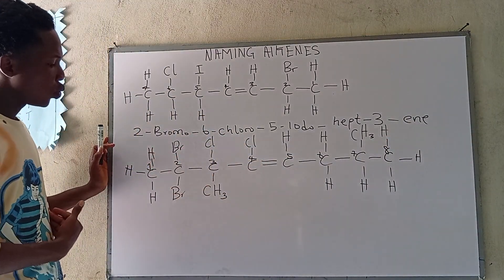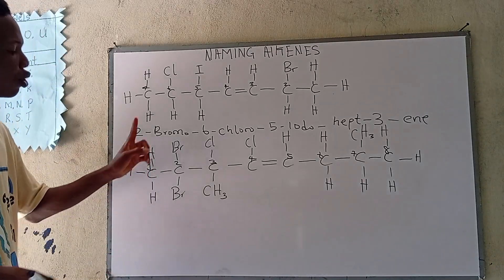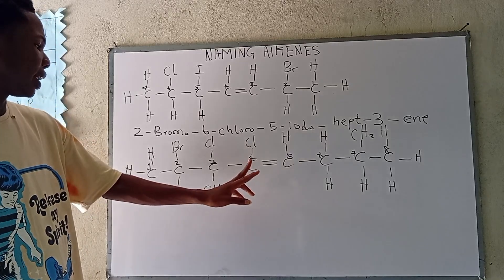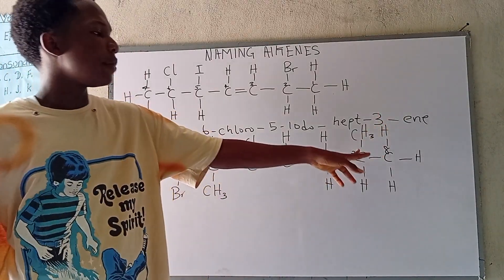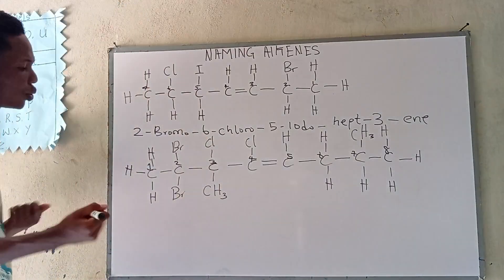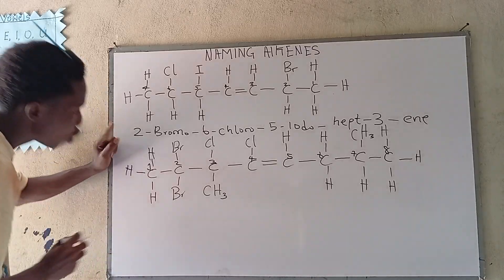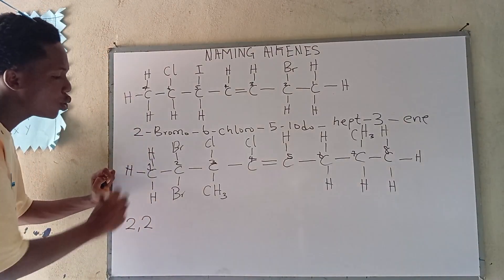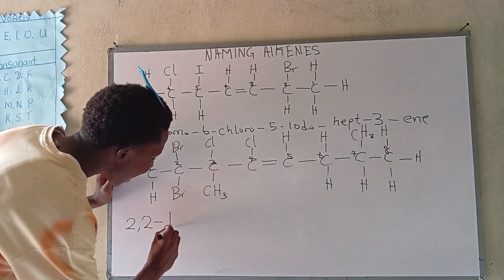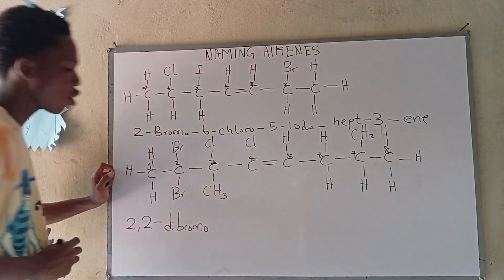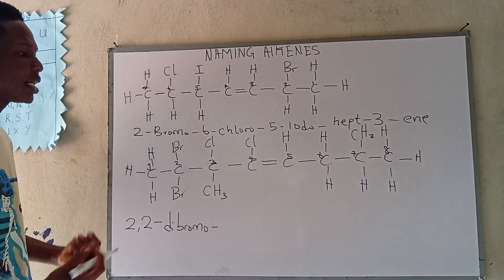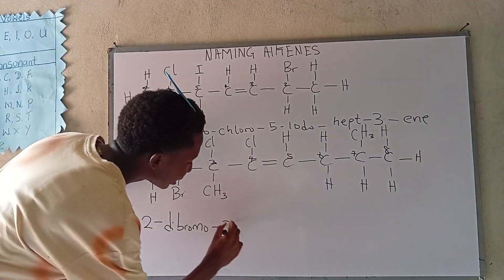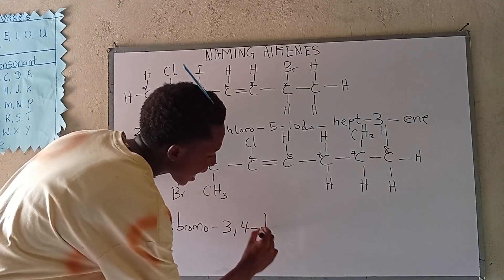Now the next thing is the substituents. We found bromo in the second carbon, chloro and methyl in the third carbon, chloro again in the fourth carbon, and methyl again in the seventh carbon. We go alphabetically. We name bromo first — it is at position two, and there are two bromo groups, so we write 2,2-dibromo. Then chloro: the first is at three and the second at four, so we write 3,4-dichloro.